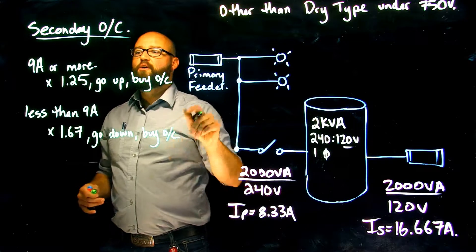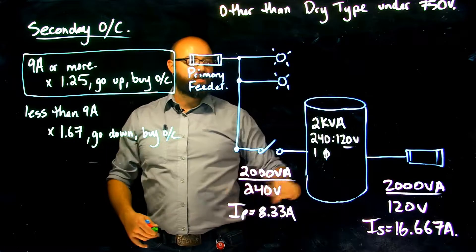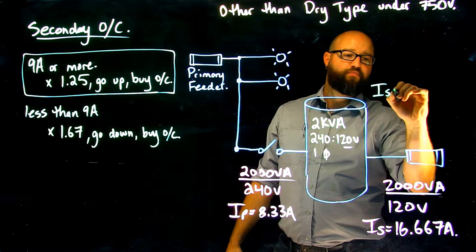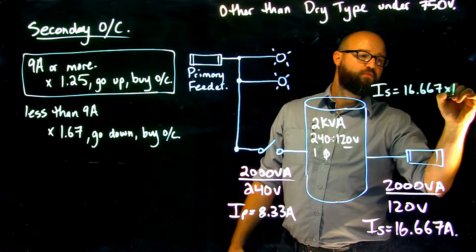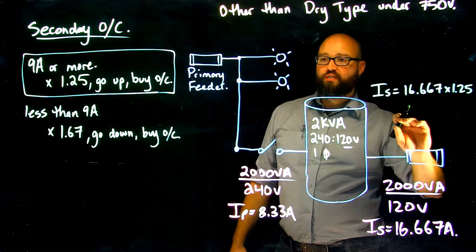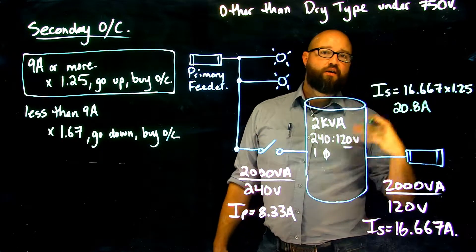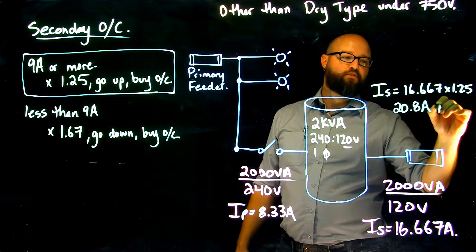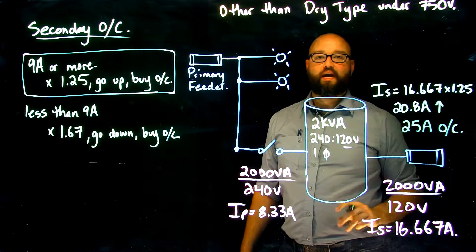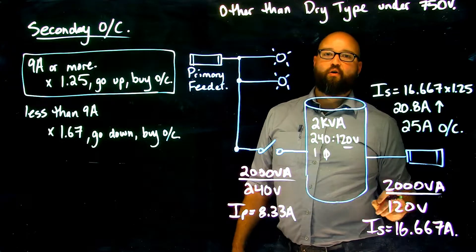We are greater than 9 amps, so 1.25 is our multiplier. Taking 16.667 times 1.25 gives us approximately 20.8 amps. Going to Table 13, there is no 20.8 amp device available, so we are allowed to go up and choose a 25 amp overcurrent device for our secondary. In order to omit that primary protection, we require a 25 amp secondary overcurrent device.